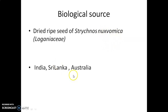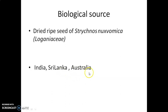Regarding geographical distribution, this plant is indigenous to the eastern part of India, northeastern India, West Bengal, and Bihar. It is also available in Sri Lanka, South India, and Australia.